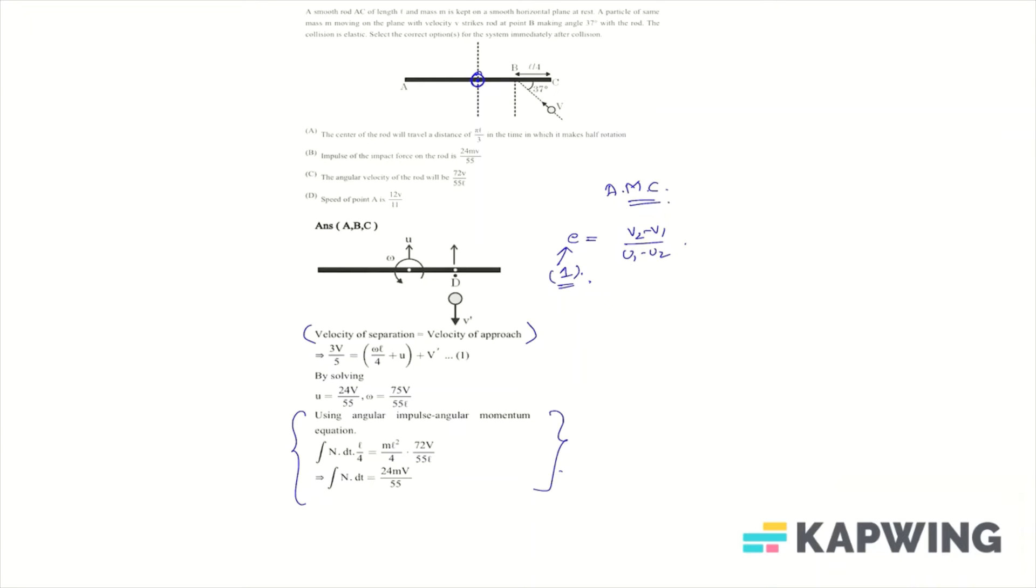So we can put it there. We can write it here. It will be ML square by 12 into, in the next term, it will be 72V by 55L. It will be equal to N into L by 4 into DT integral. So we need impulse, we need N dot DT value. That's about how much value. It will be like ML square by 12 into 72V by 55L into 4 by L. So this is 4-3, and therefore it will be 24.